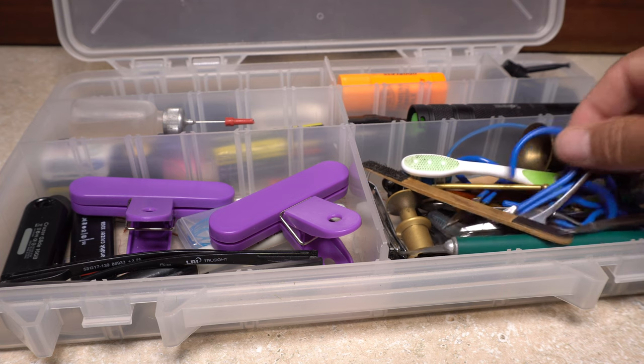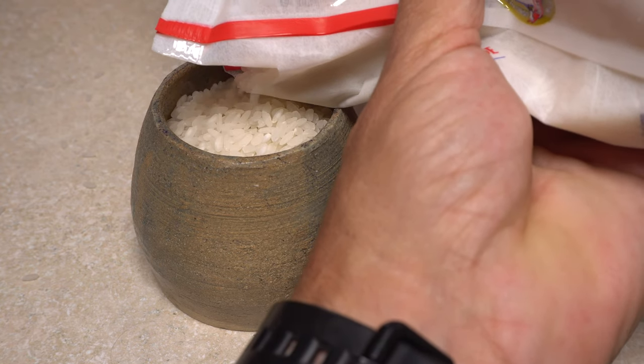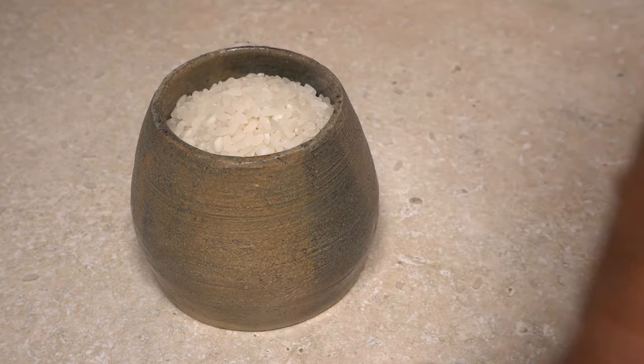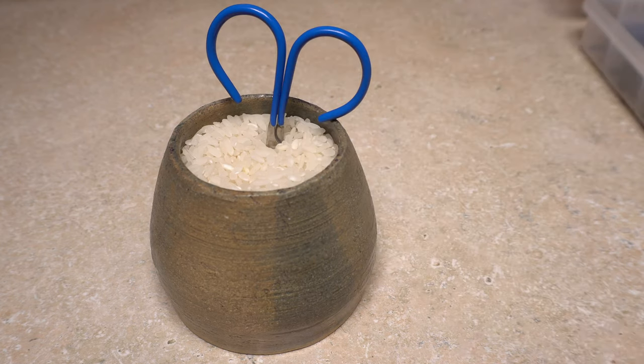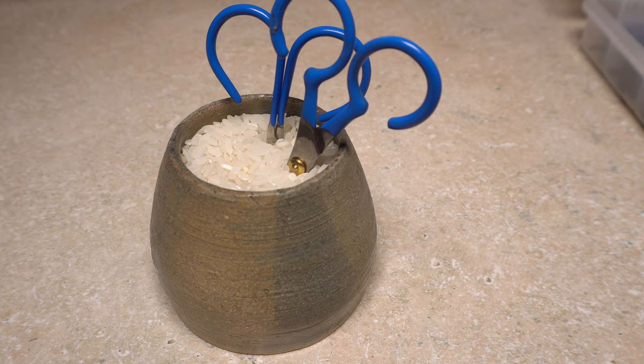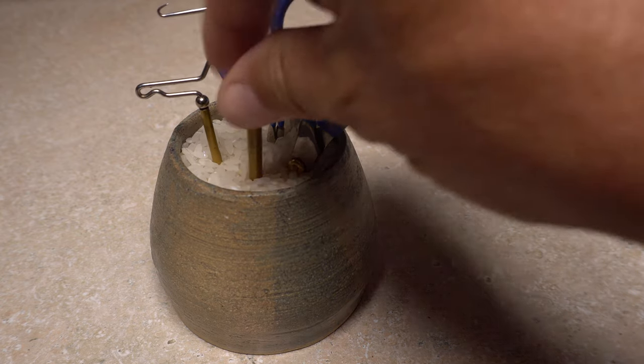Fellow tyer Gary Hartung suggested another storage method that I've found works incredibly well. Simply fill a small container with uncooked rice and insert your most used tools in it tips first. With this, the tools are super handy, and the rice absorbs moisture, which helps keep them from rusting.